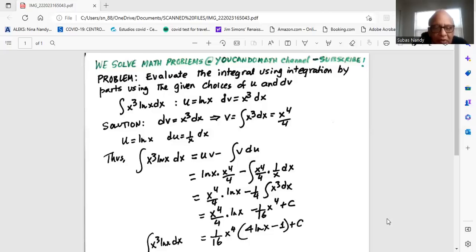This is equal to x to the 4 divided by 4 multiplied by ln x minus 1 over 4 times integration of x cubed dx, which equals x to the 4 over 16 plus c.